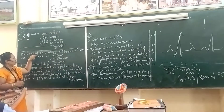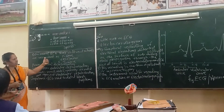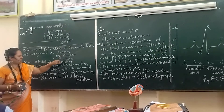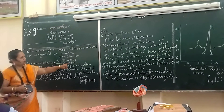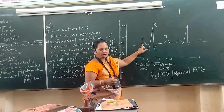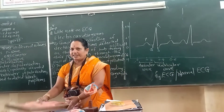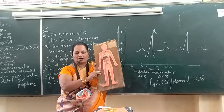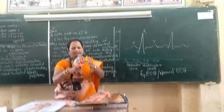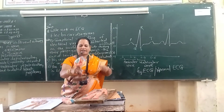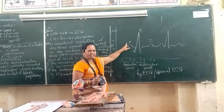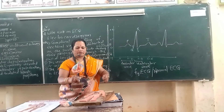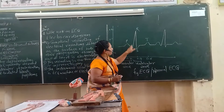In a normal ECG, three different waves occur: the P wave, the QRS complex, and the T wave. The P wave represents the auricular system — when the auricles, the two upper chambers of the heart, get contracted, that wave is recorded and called the P wave. When the ventricles get contracted, that wave is recorded in the form of the QRS complex.